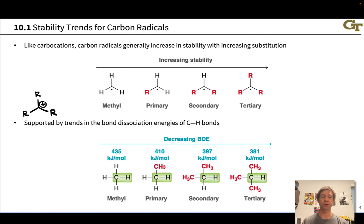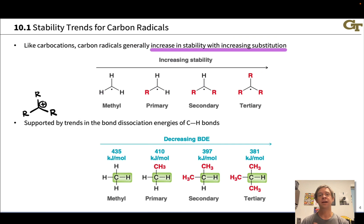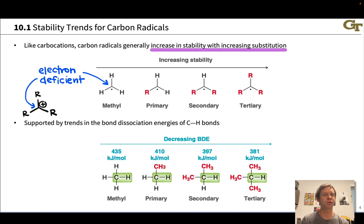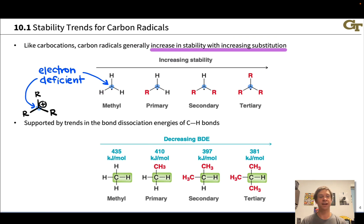If we look at the stability trends for methyl, primary, secondary, and tertiary carbon radicals, we see that increasing substitution — increasing the number of R groups linked to the radical carbon — increases the stability of the radical. This is the exact same trend we observe with carbocations. As we increase the substitution on the cationic carbon, we get an increase in stability. Part of the reason we can rationalize this is that both the carbocation and the trigonal carbon radical are electron-deficient species at a carbon violating the octet rule with fewer than eight electrons.